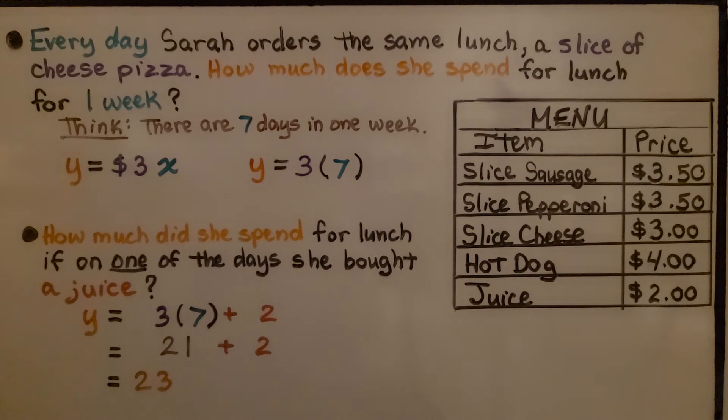How much did she spend for lunch if on one of the days she bought a juice? Well, then our equation would be y = 3(7) + 2, since juice is $2. We have 21 plus 2, that's $23 for seven days of cheese pizza with one juice on one of the days.